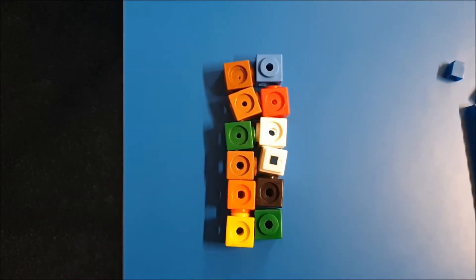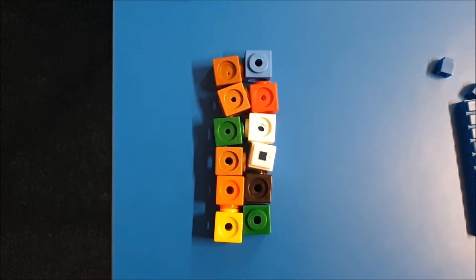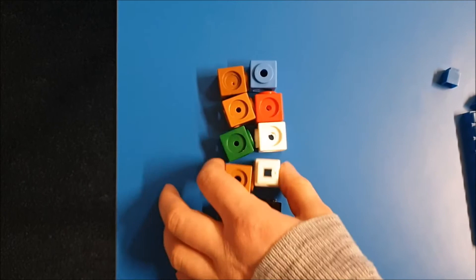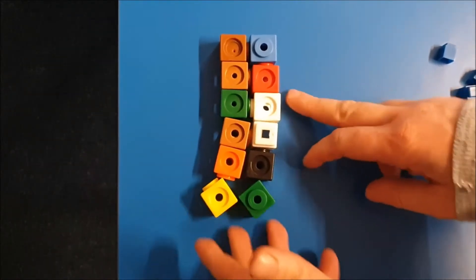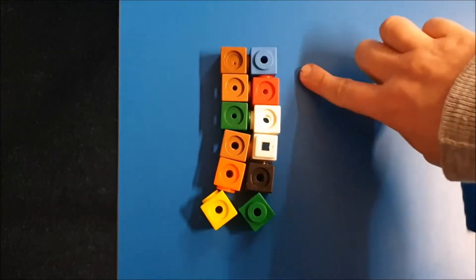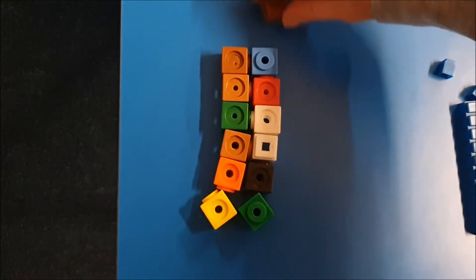For example, if you've got the calculation 12 add 3, the child will first count out 12, either in twos if they're confident or counting in ones if they can't. Count to 12 and then they are counting on 3.